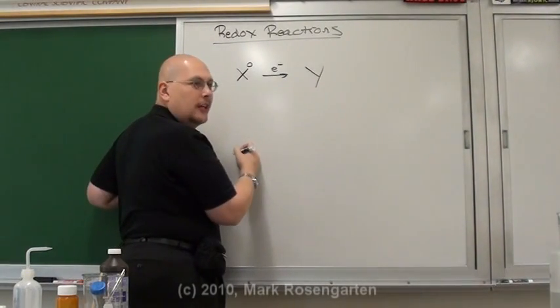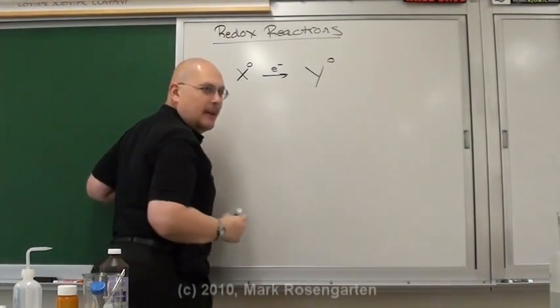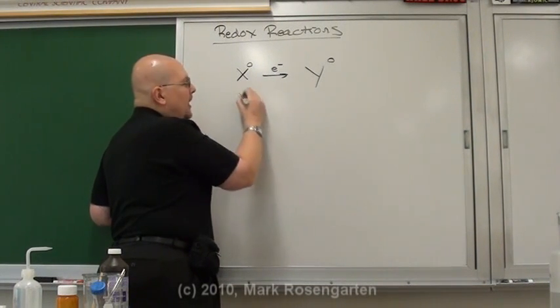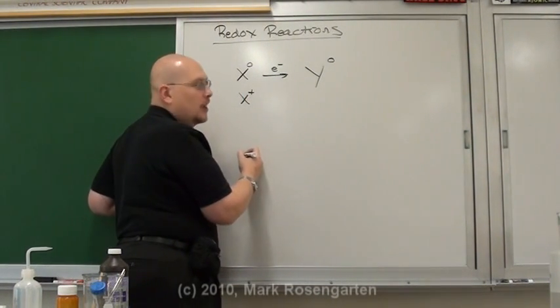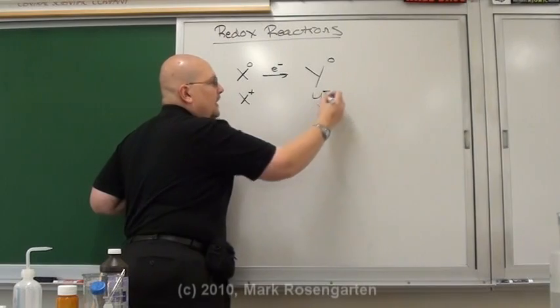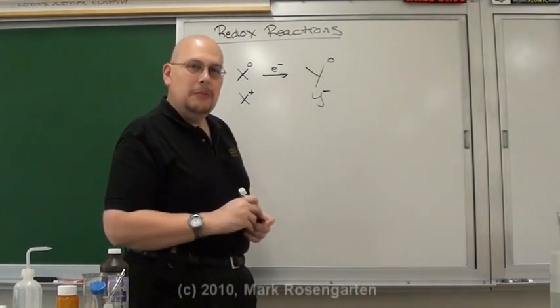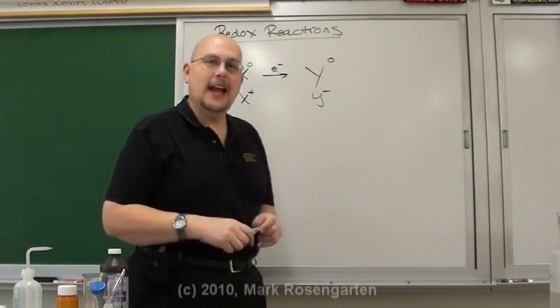For example, a metal will give its electrons to a nonmetal. When this happens, the metal becomes positively charged and the nonmetal becomes negatively charged. Of course, forming an ionic bond would be considered a redox reaction.